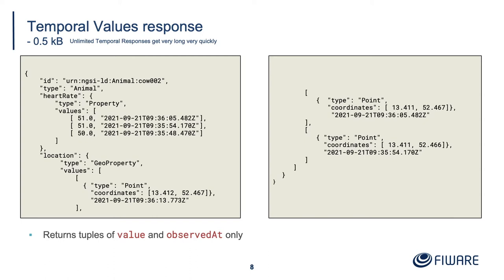The temporal values format is shorter. You can see more values — it's just an array of tuples. We have heart rate and location, and within each attribute object it says whether it's a property, geo property, or relationship. You've got a two-dimensional array with value and timestamp. By default the timestamp is going to be observedAt. So you've got the heart rate changing over time. If you want to display this cow's heart rate on a graph, you've got all the information you need. Because you've got the linked data information, you know this heart rate is in beats per minute.